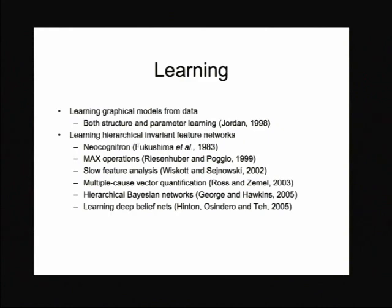The model discussed in the Lee and Mumford paper was relatively abstract. It was primarily used as a basis for explaining data from performing operations — probing humans during surgery for medical reasons, and also in monkeys, which are the primary method for looking at cortical behavior. The basic idea is that in some sense the cortex is a generative model that can be described as a graphical model or Markov random field.